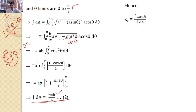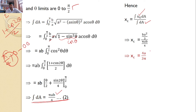Hence, the X-coordinate XC = ∫XG dA / ∫dA = (BA²/3) / (πAB/4). After simplification, XC = 4A / (3π). This is the X-coordinate for the one quarter of the ellipse.